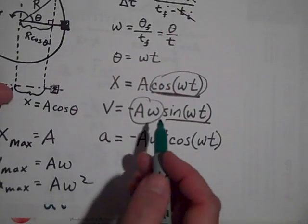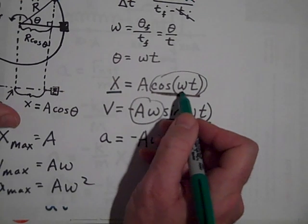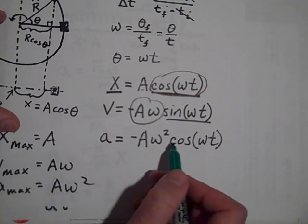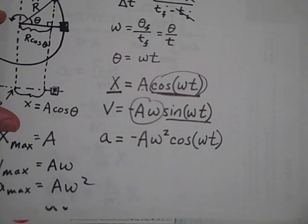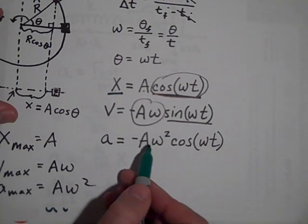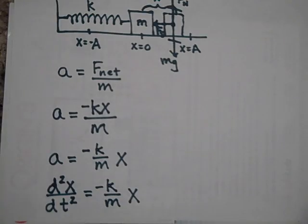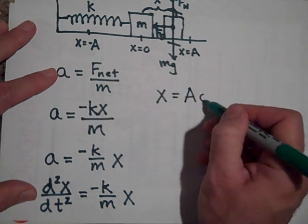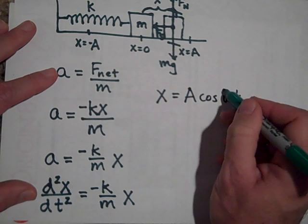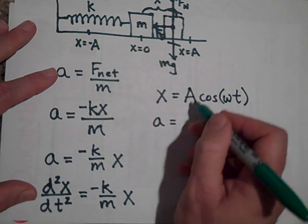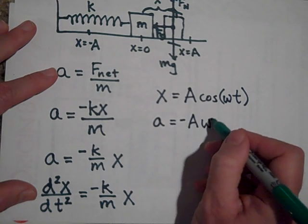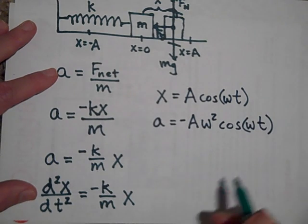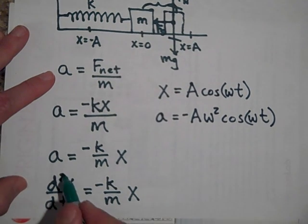We're back here. Here was x, it's A cosine omega t. And a is negative A omega squared cosine omega t. So these are almost identical. There's only an omega squared in there. So if we look, x, what I just told you is if x equals A cosine omega t, and if a, by taking two derivatives, we get negative A omega squared cosine omega t.